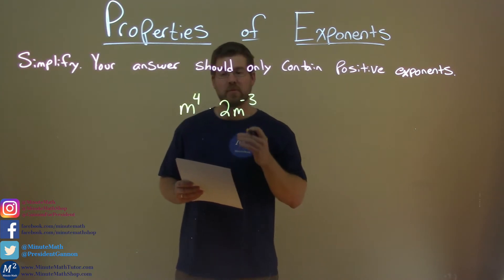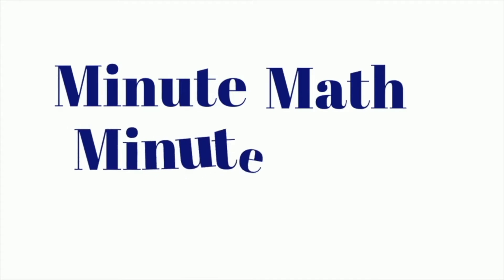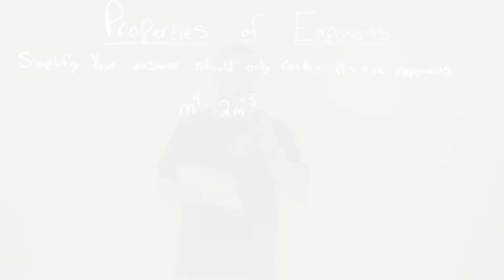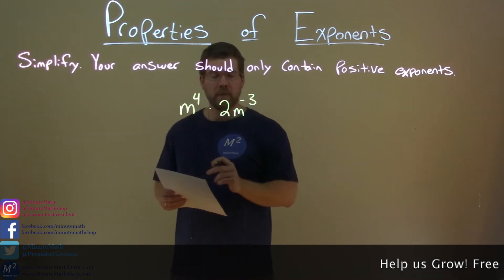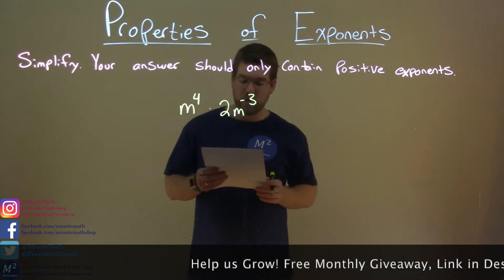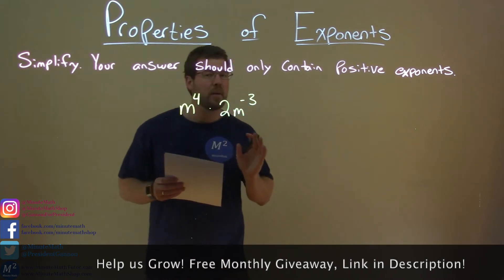If I was given this problem, we want to simplify m to the fourth power times 2m to the negative third power. Now this becomes a little tricky.